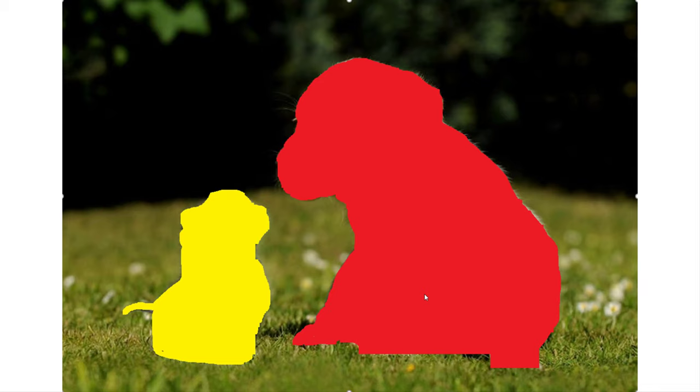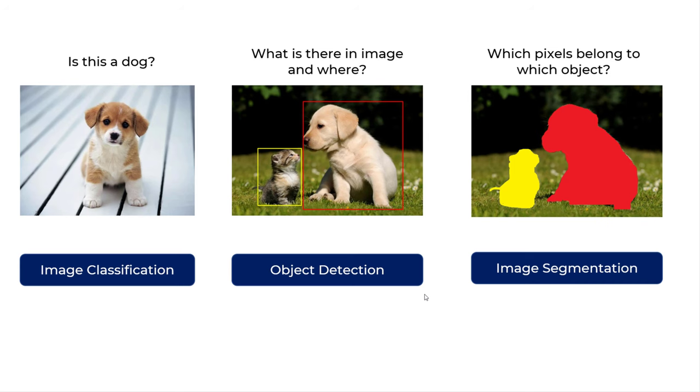You can go one level further and classify each pixel as one of the classes. For example, all the red pixels belong to the dog and yellow pixels belong to the cat. This is more fine-grained classification where you are exactly specifying which class each pixel belongs to.